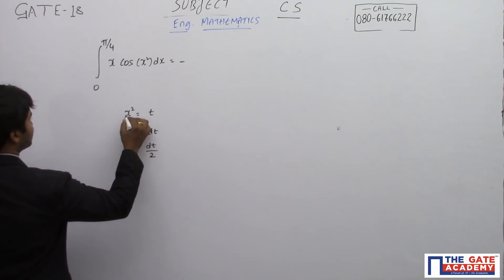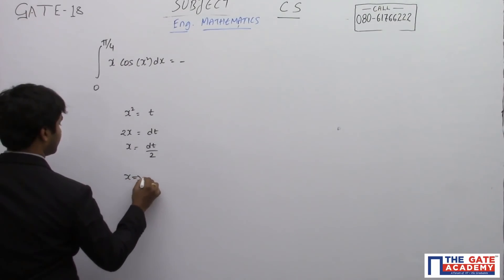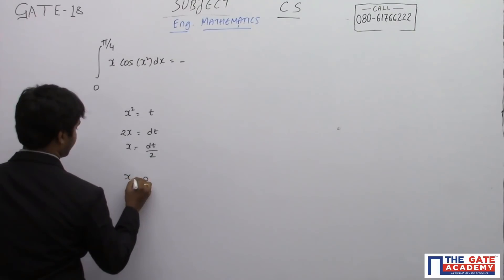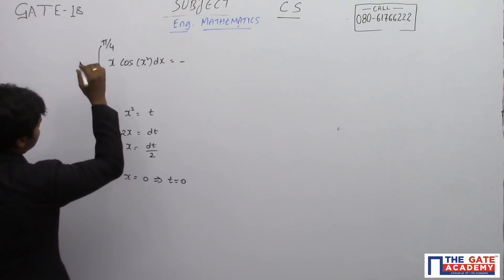If x square is equal to t, and x is equal to 0, which implies that the value of t is also equal to 0.